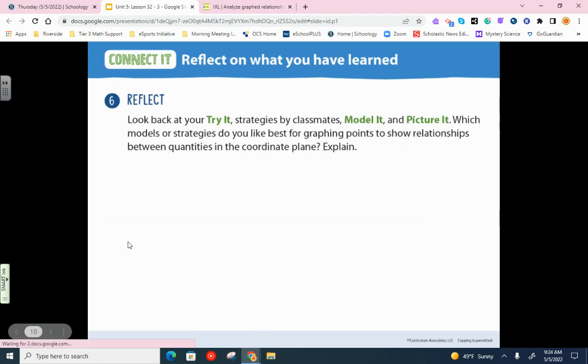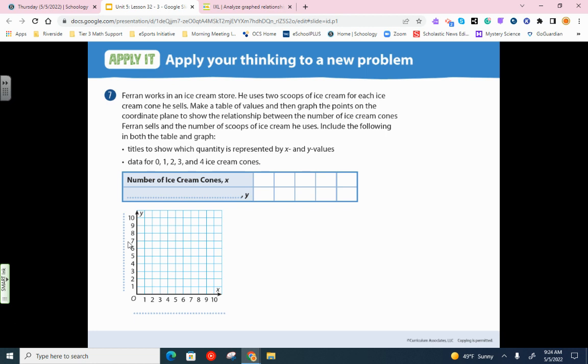You can skip six and turn the page. I want us to do a couple practice problems to make sure we're ready. Ferran works in an ice cream store. He uses two scoops of ice cream for each ice cream cone he sells. Underline that because that's the main idea right here. So for every ice cream cone, you're going to see two scoops on it. So let's fill in this table down here. We're going to compare ice cream cones and number of scoops. If you have no ice cream cones, there's no scoops. If there's one, there's two scoops. Two, there's four. Three, there's six. Four, there's eight. You can see the pattern right there.